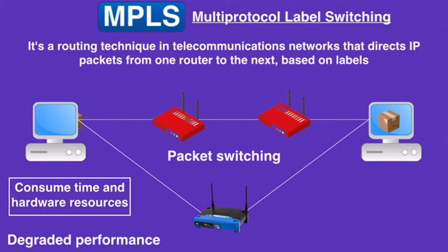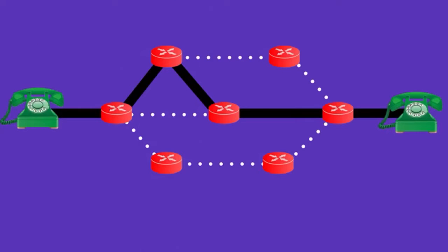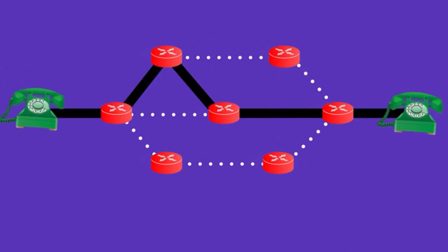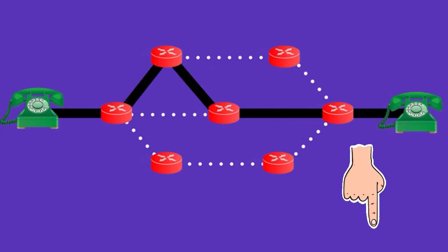This is the packet switching technique, where the data path is not fixed — a packet can take different routes to get to its destination, so each router makes an independent forwarding decision for each packet. Every time a packet arrives at a router, the router has to think through where to send it next. On the other hand, in circuit switching, the data path is fixed; it's used in traditional telephone networks. There is a complete video on packet and circuit switching — the link is in the description.